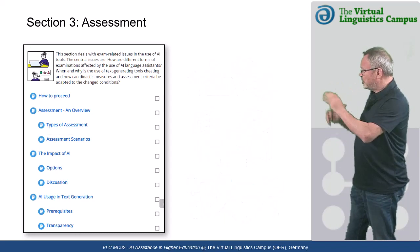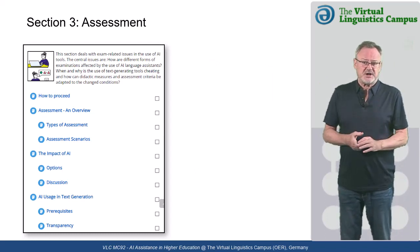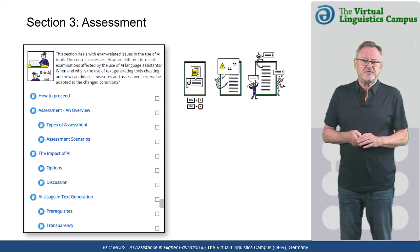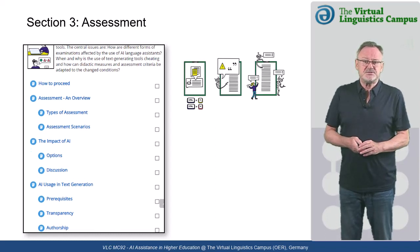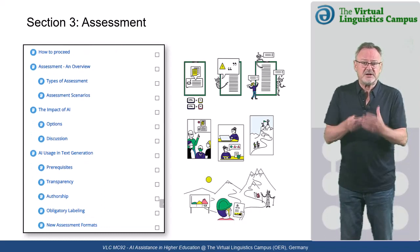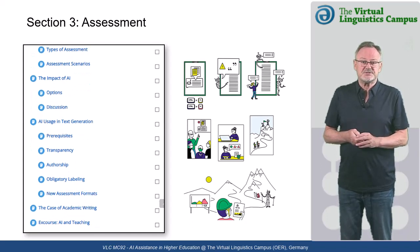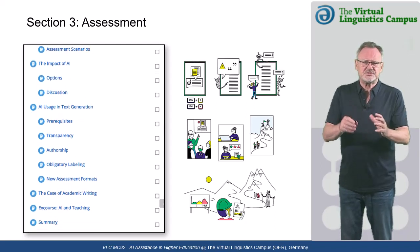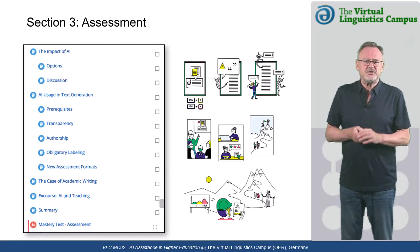Section 3 focuses on assessment. The central issues are how different forms of examinations are affected by the use of AI language assistance, when and why the use of text-generating tools constitutes cheating, and how didactic measures and assessment criteria can be adapted to these new conditions. For those users who have never dealt with assessment, this section also hosts an introductory overview of assessment at its onset.